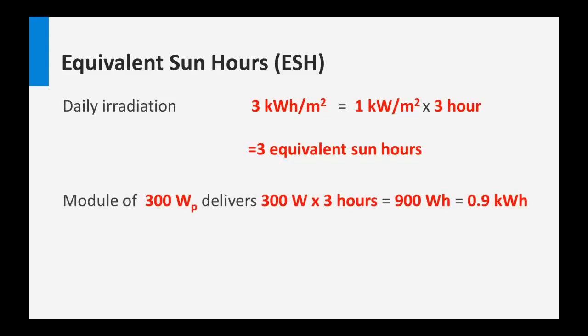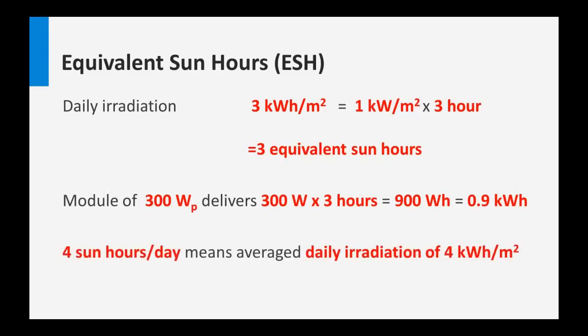This is a handy parameter. Consider again the module of 300 watt peaks: on a day with 3 equivalent sun hours on average, it delivers 300 watts times 3 hours, which is 900 watt hours or 0.9 kilowatt hours of energy. So if we have 4 sun hours per day, the average daily irradiation would be 4 kilowatt hours per square meter.